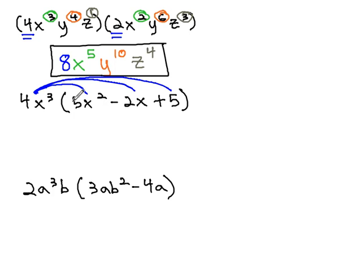When we distribute 4 times 5, we get 20, and now with the x's, 3 plus 2 gives us x to the 5th. Continuing to the next term, 4x cubed times negative 2x, 4 times negative 2 is negative 8, and then on the x's, 3 plus 1 is 4.